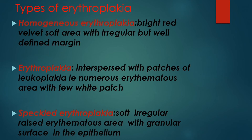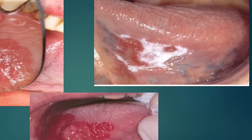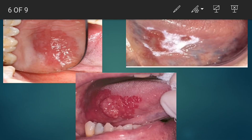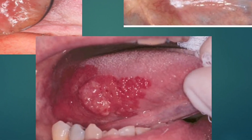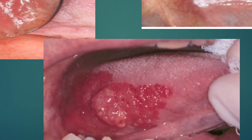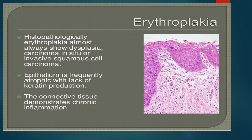The second type is erythroleukoplakia, which is interspersed with patches of leukoplakia — numerous erythematous areas with a few white patches, a mixture of red and white patches as visible in the picture. The third type is speckled erythroplakia, which presents as a soft, irregular, raised erythematous area with a granular surface. As seen in the picture, it has raised structures with a grainy texture in the epithelium.